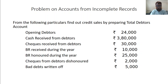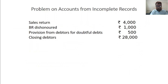From the following particulars, find out the credit sales by preparing total debtors account. Opening debtors: Rs. 24,000. Cash received from debtors: Rs. 3,80,000. Cheques received from debtors: Rs. 30,000. Bills receivable received during the year: Rs. 10,000. Bills receivable honoured during the year: Rs. 25,000. Cheques from debtors dishonoured: Rs. 2,000. Bad debts written off: Rs. 5,000. Sales return: Rs. 4,000. Bills receivable dishonoured: Rs. 1,000. Provision for doubtful debts: Rs. 500. Closing debtors: Rs. 28,000.